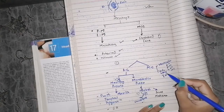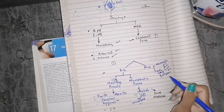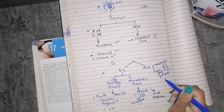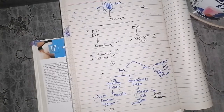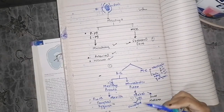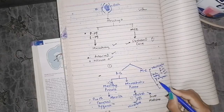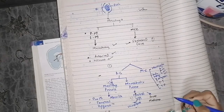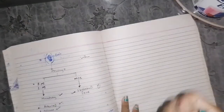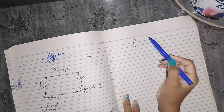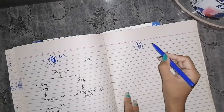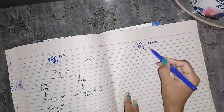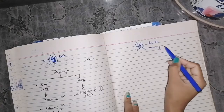The anterior belly of the digastric muscle also comes from the first pharyngeal arch. Additionally, since the ear is also being formed here, there are two ear muscles: tensor tympani and tensor palatini. These are all the muscular components of the first arch. Each arch also has an arterial supply and a nervous component, along with mesenchyme forming both bones and muscles.